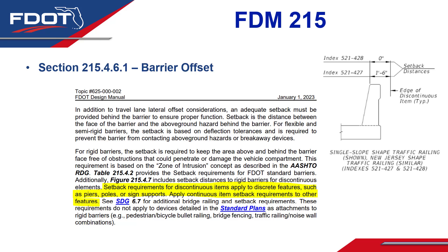The next revision is under Section 215.4.6.1 for barrier offset, specifically the setback distance requirements as measured to items behind the barrier. Setback is defined as the distance between the face of the barrier and the above-ground hazard behind the barrier. The setback distance requirement is dependent on whether the item is considered discontinuous or continuous. Based on designer feedback showing misunderstanding on this difference, new language was added to this section to help clarify.